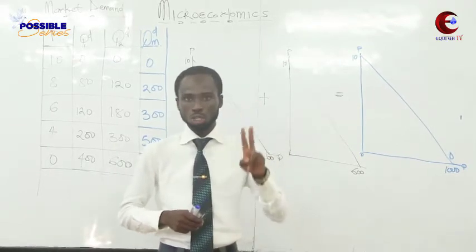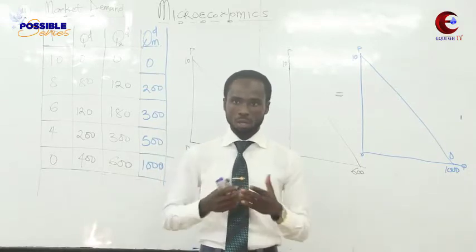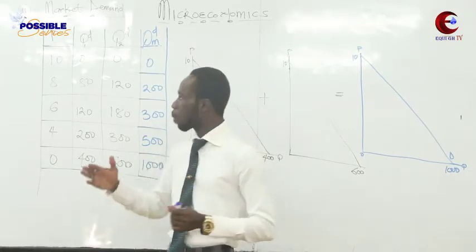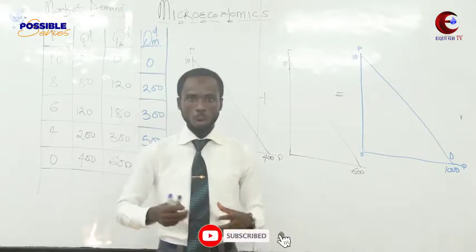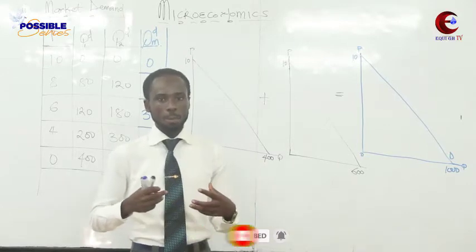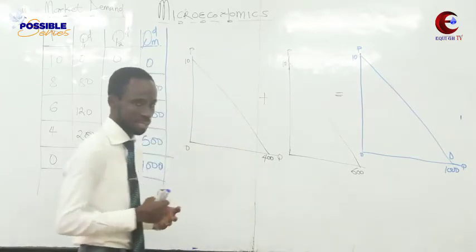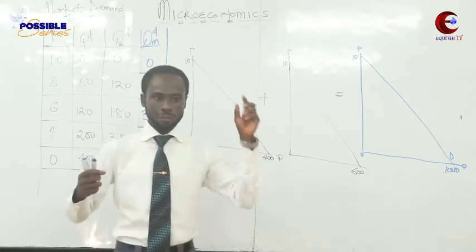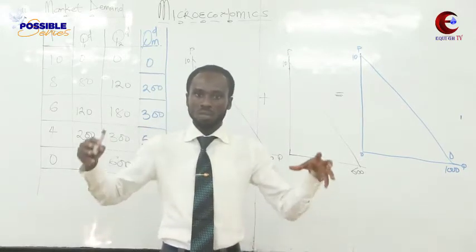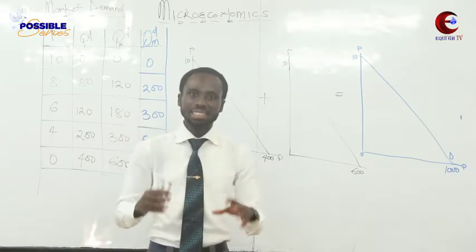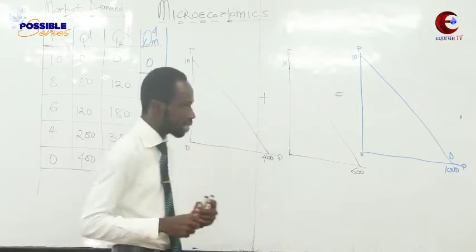Today we are going to look at only two consumers. If you understand that, it means that if you have been given three or more you'll be able to solve that. Market demand is the aggregate of what two or more consumers will consume — the summation of the individual demands. If consumer A is consuming this and consumer B is also consuming this and you put the two together, we get what is called market demand.